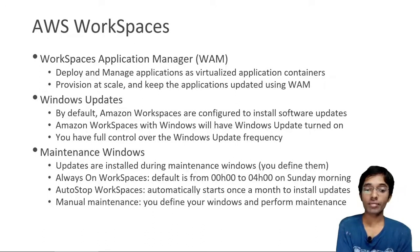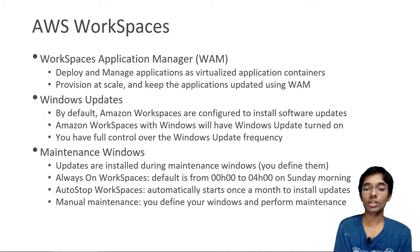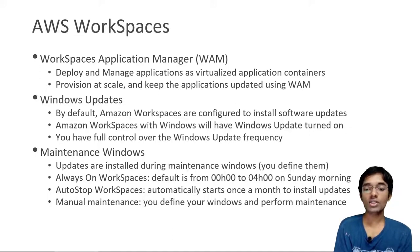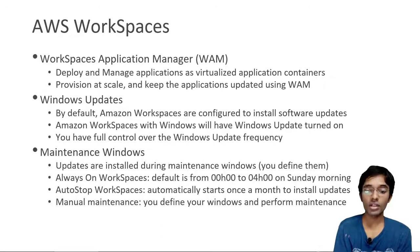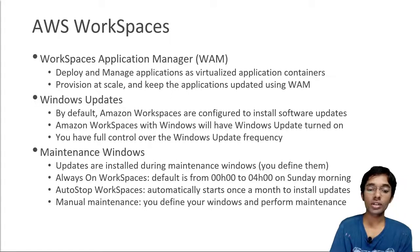This is different from Windows Updates. WorkSpaces Application Manager is just for applications, whereas Windows Update is for updates of your Windows machine. By default, Amazon WorkSpaces are configured to install software updates, and by default any WorkSpaces that you create — that is the Windows install — will also have Windows Update turned on. You have full control over how often you want Windows Update to run, but it runs during maintenance windows.